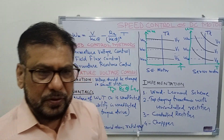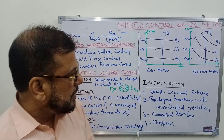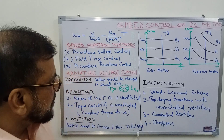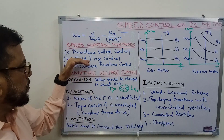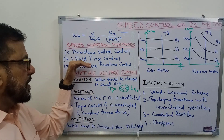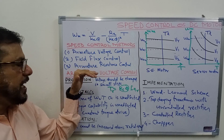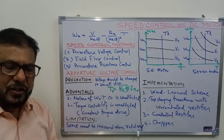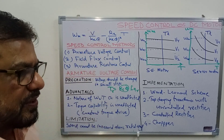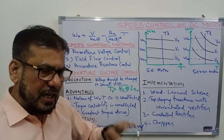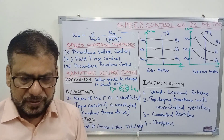That is all for this lecture. In the next lecture we shall discuss the other two methods — field control and armature resistance control — and then compare these methods, their advantages and disadvantages.